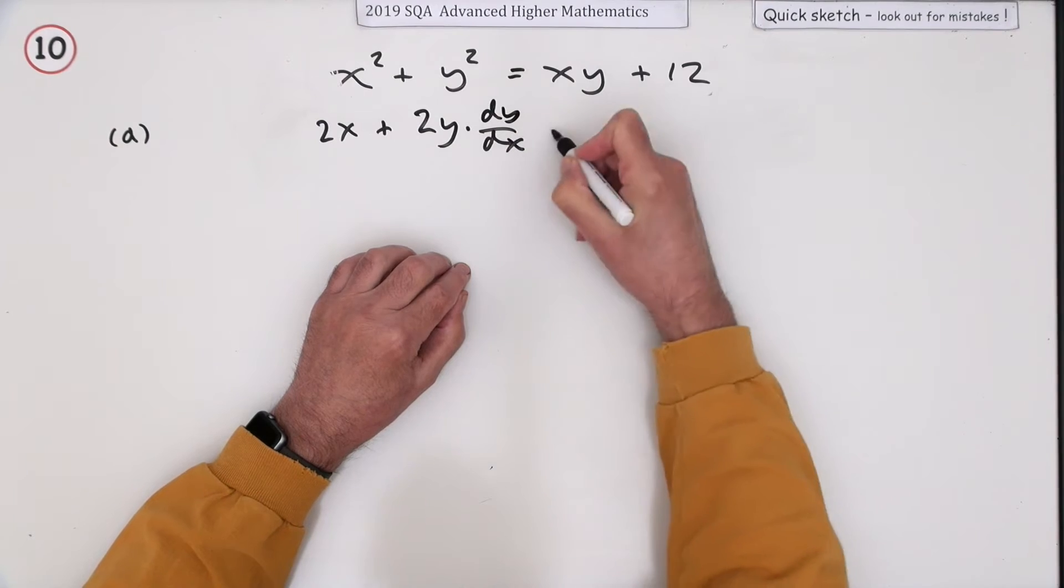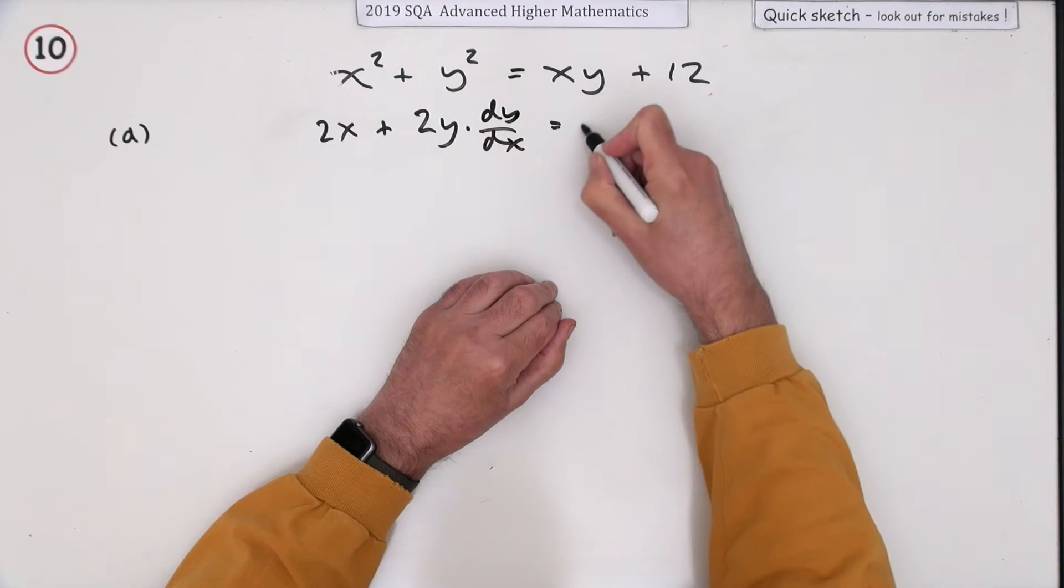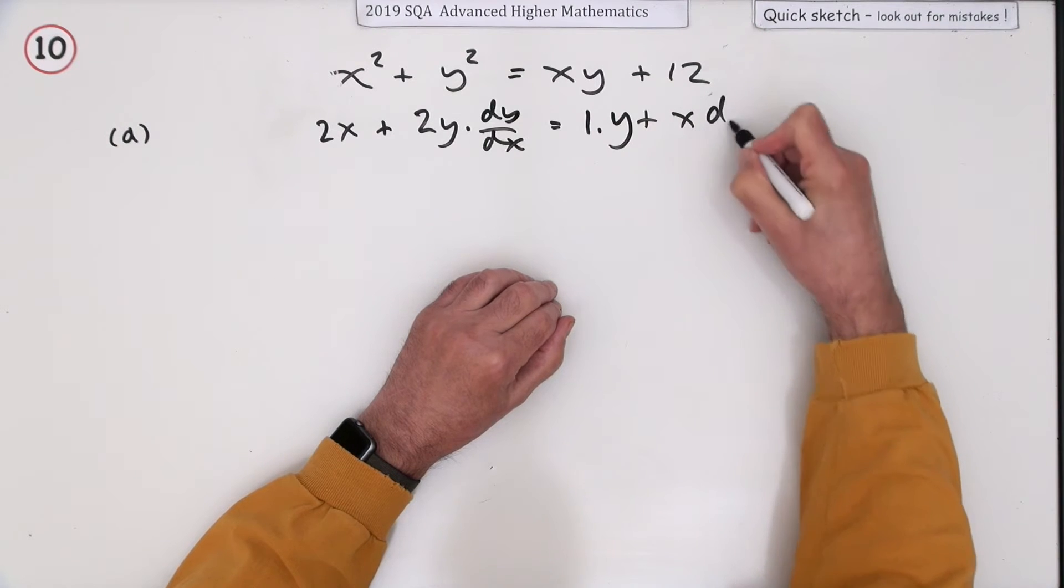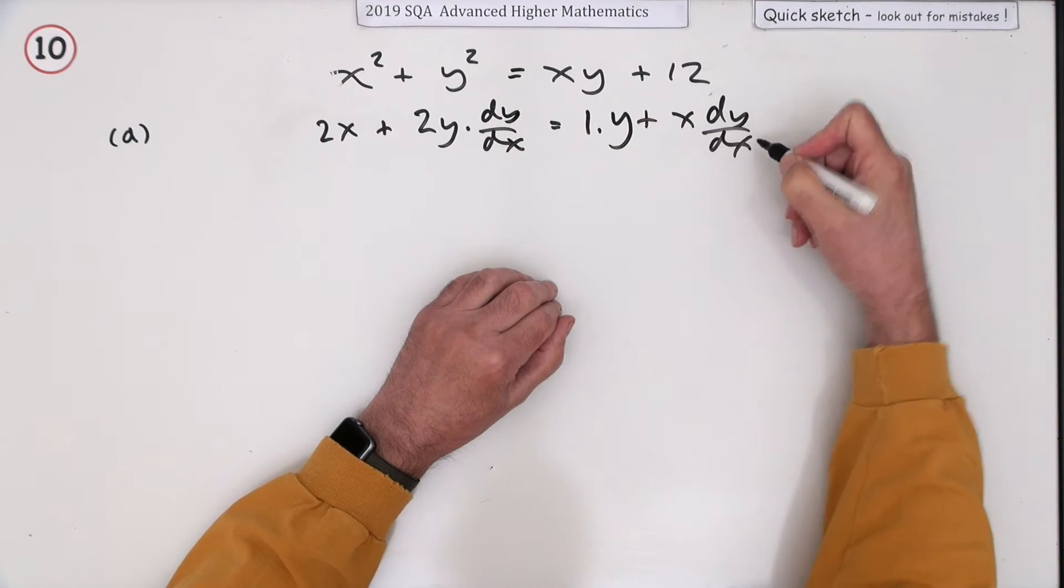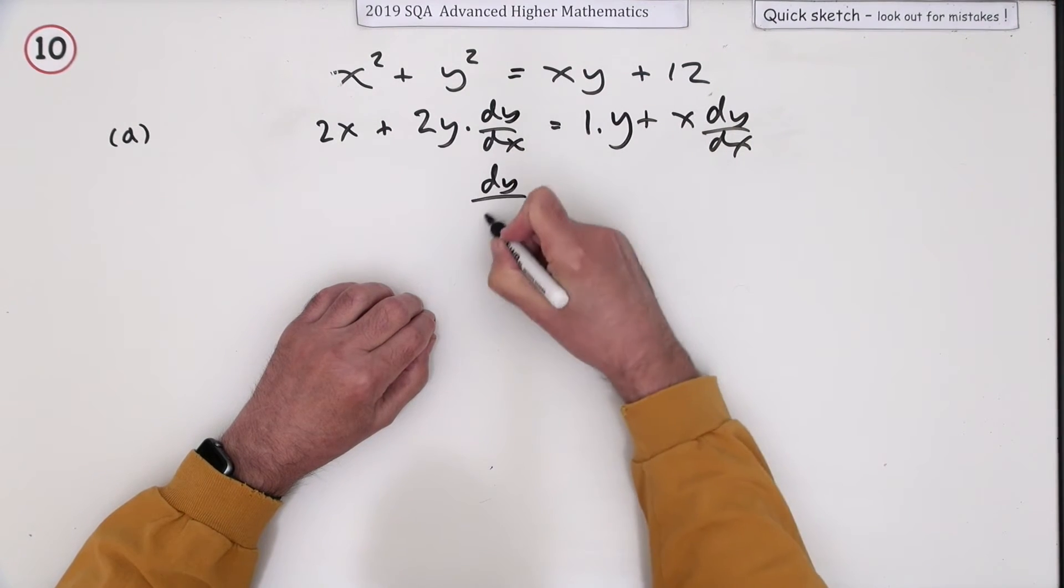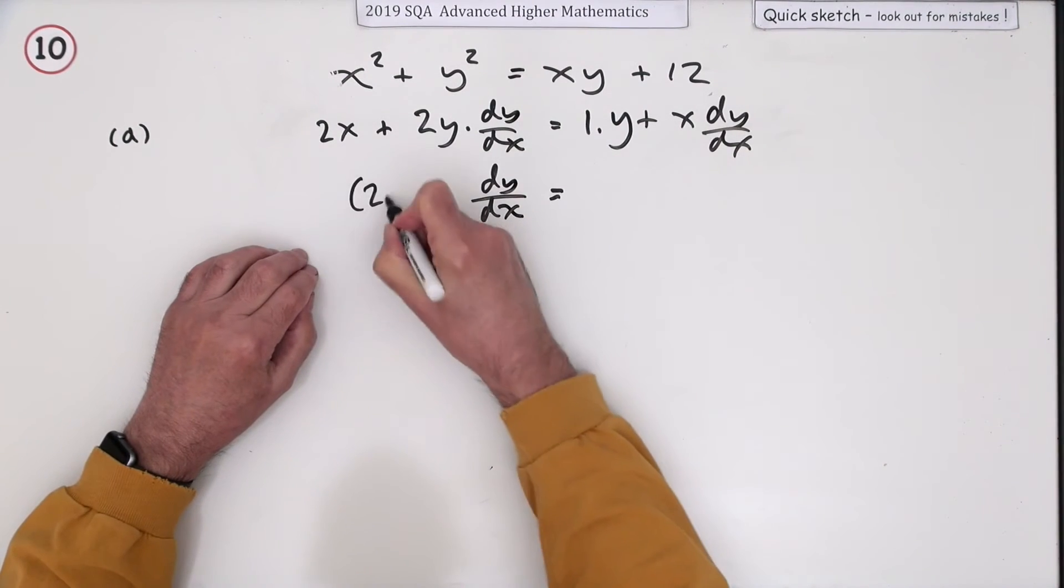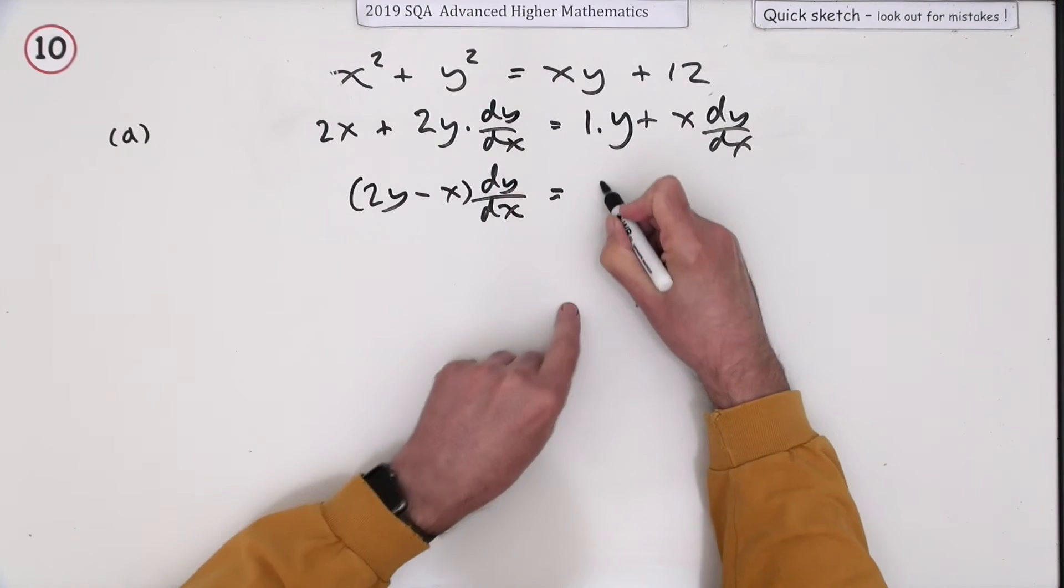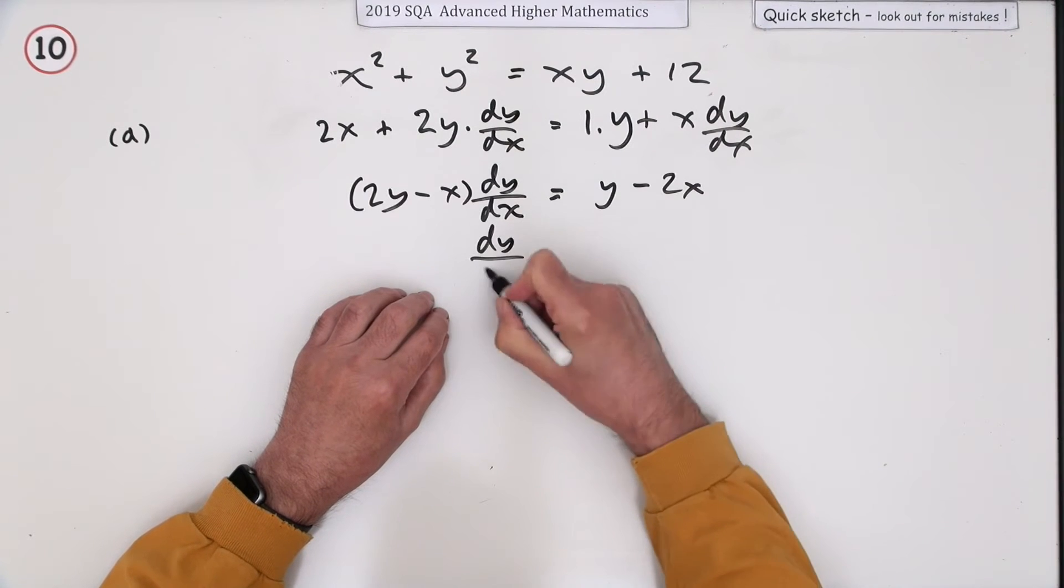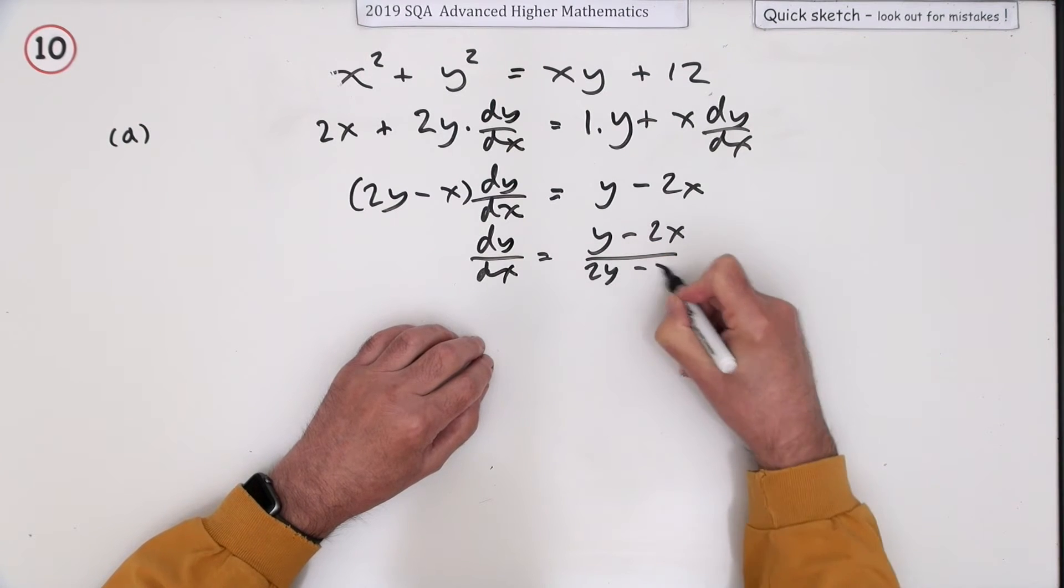Now this is a product, so product rule: x is just one, leave y alone, and then x times dy/dx. And 12 is a constant so it disappears. Now gather the dy/dx on this side, so I've got two y of them, and I'll be taking away x, leaving a single y minus 2x on the other side. So finally, dy/dx will be (y - 2x) over (2y - x).